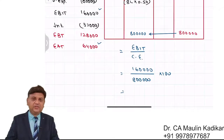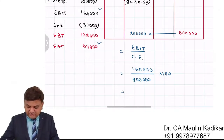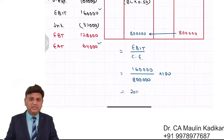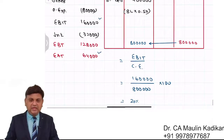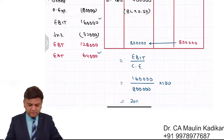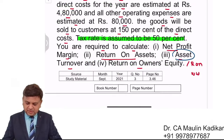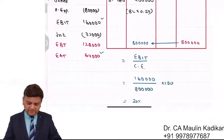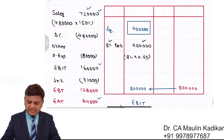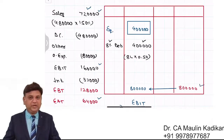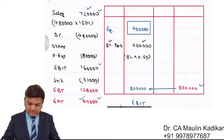Clarity should be given in the question whether return on asset is to be found on a pre-tax or post-tax basis. In absence of information, we can answer either way and put a note. The third question is asset turnover ratio: sales upon assets equals 0.9 times. Return on equity is 64,000 divided by 4 lakhs into 100, which is 16%.